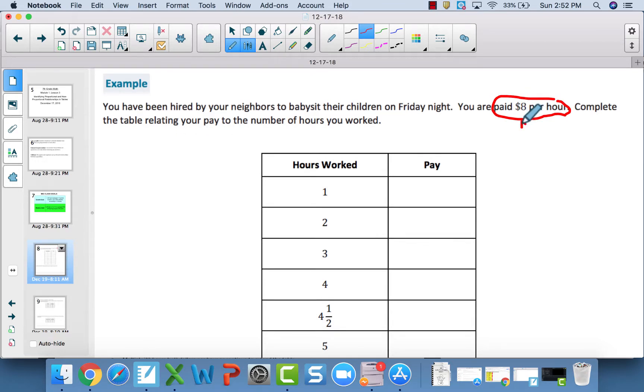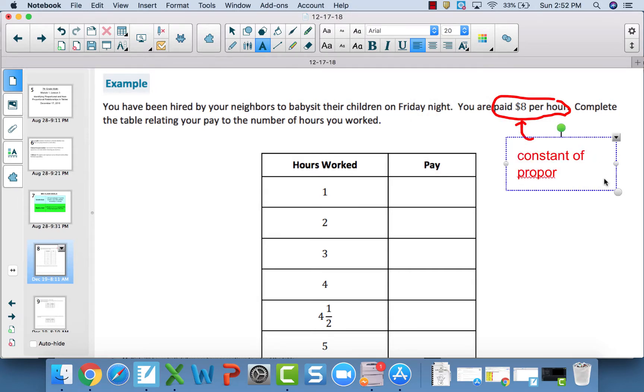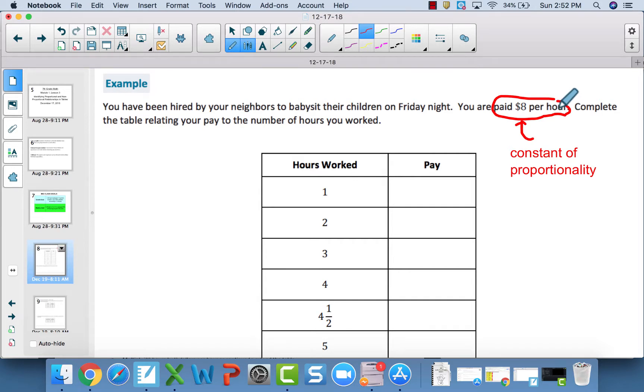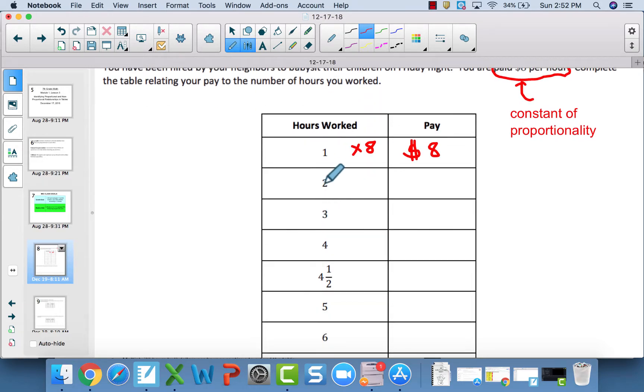This $8 is what is going to be called our constant of proportionality. Previously, we have referred to that as unit rate and scale factor. It's the same idea, but that $8 per 1 per hour is our constant of proportionality. So that means we take our hours worked and multiply by 8 to get the pay.